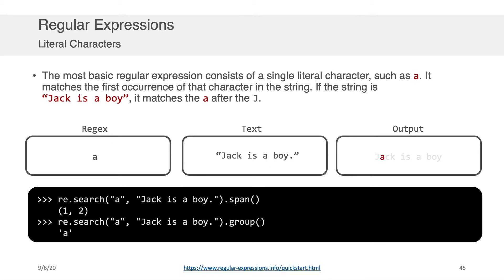Let's look at the most basic simple regular expression we could ever write. Say we have the text 'Jack is a boy' and we're interested in identifying where the first 'a' is in that sentence. The regular expression is literally just the character 'a'. In Python, we write re.search with our regular expression — just the letter 'a' — followed by the string 'Jack is a boy'. We can then use the dot span command to find that 'a' starts at position one and ends at position two, and the matched character is 'a'.